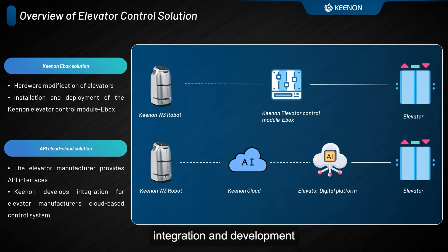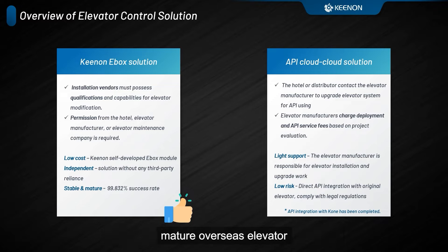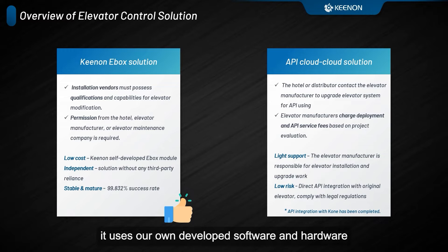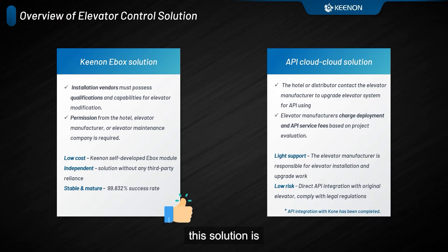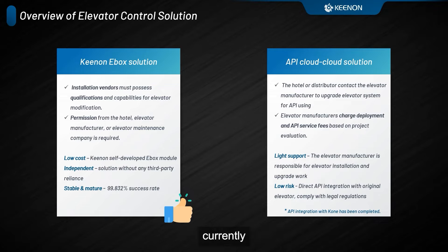Kenan is responsible for API integration and development. Now I'm going to talk about the advantages and disadvantages of each solution. The Kenan EBOX Solution is currently the most mature overseas elevator control solution. Whenever local regulations permit elevator modifications and the deployment conditions are suitable, we prioritize the adoption of the Kenan EBOX Solution. This solution has many advantages: it uses our own developed software and hardware, so there's no need for a long development process. This solution is very stable and has a very high success rate for calling elevators — almost 99.8% — no matter what the elevator brand is.